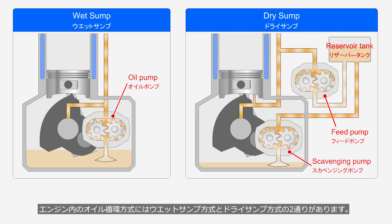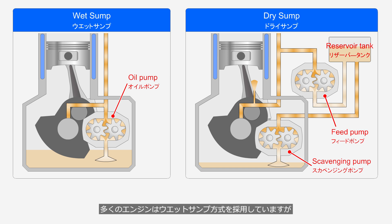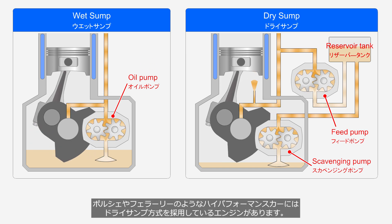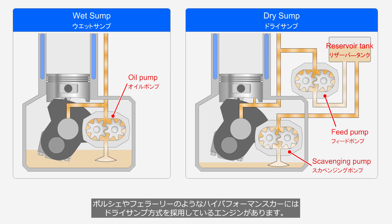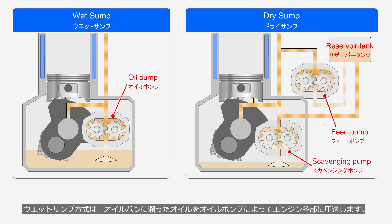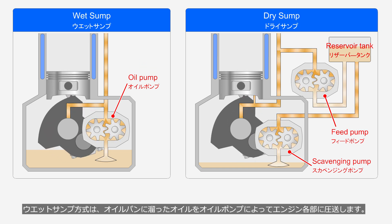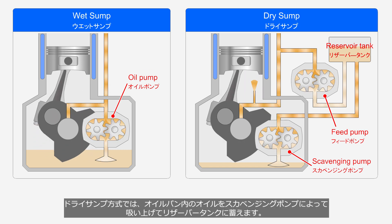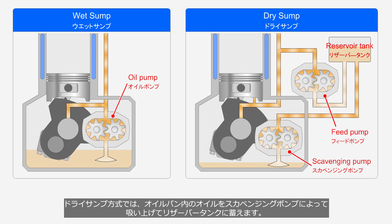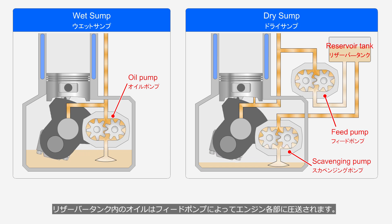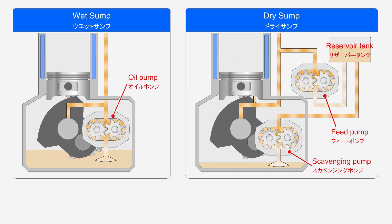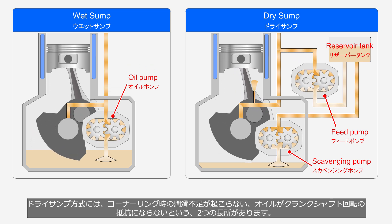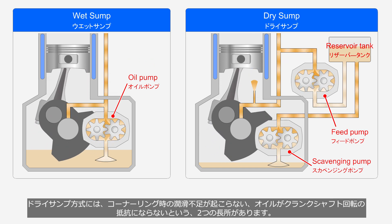There are two methods of oil circulation: wet sump system and dry sump system. In general, passenger car engines use a wet sump system, but some high-performance cars such as those from Porsche and Ferrari use a dry sump system. In the wet sump system, oil accumulated in the oil pan is supplied to sliding components through an oil pump. In the dry sump system, the oil in the oil pan is suctioned up by a scavenging pump and stored in a reservoir tank, and a feed pump supplies that oil to sliding components. The dry sump system has two main advantages: it prevents lubrication failure during cornering, and it reduces resistance caused by oil coming into contact with the rotating crankshaft.